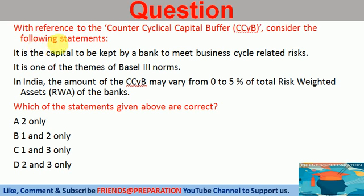With reference to the counter-cyclic capital buffer, consider the following statements. Statement 1: It is a capital kept by the bank to meet business cycle related risks. Statement 2: It is one of the themes of Basel Third Norms. Statement 3: In India, the amount of CCYB may vary from 0 to 5% of total risk-weighted assets of the bank. Which of the statements given above are correct?